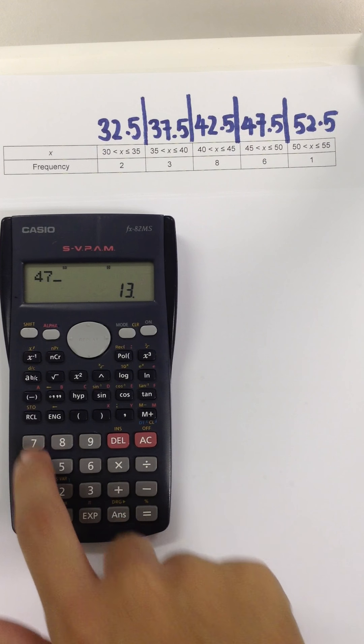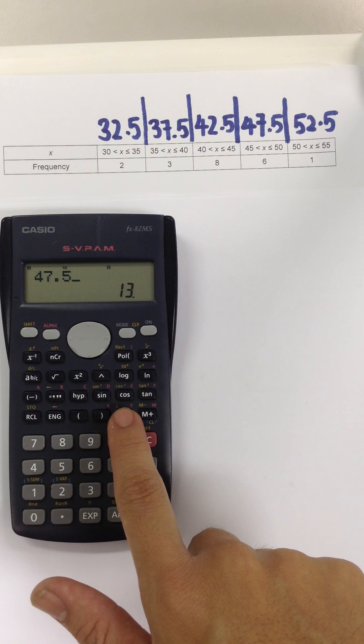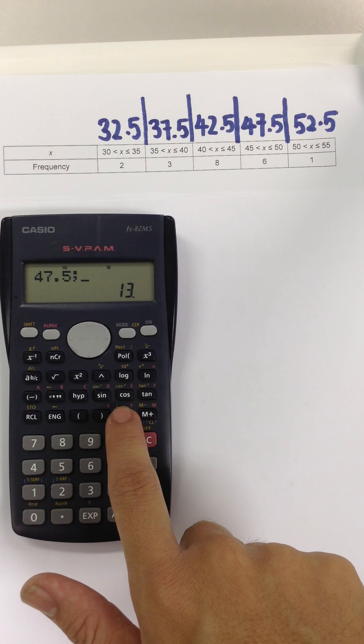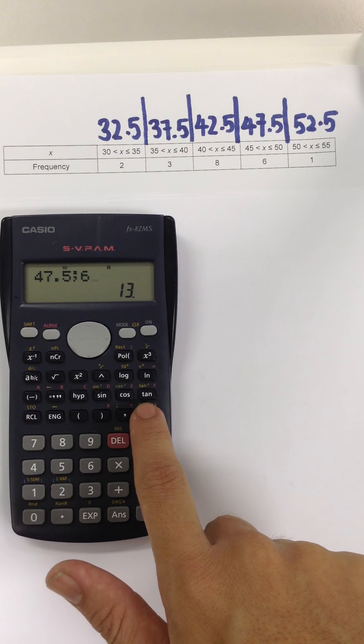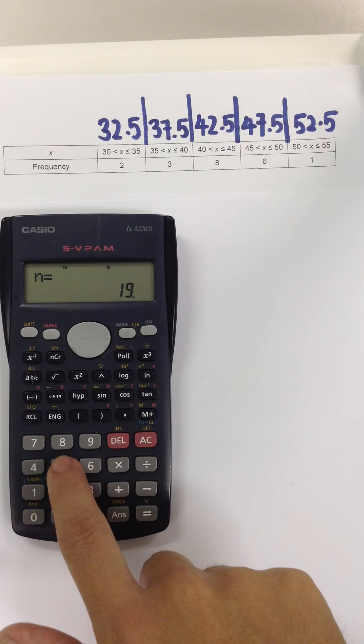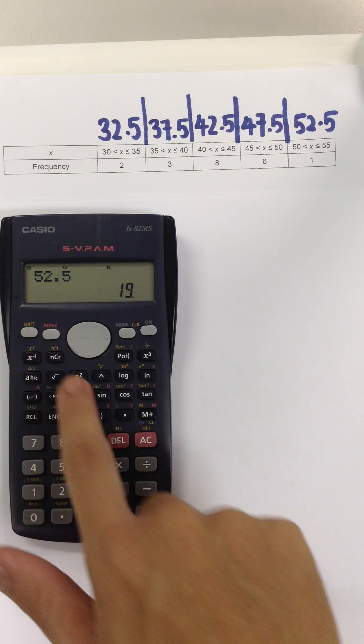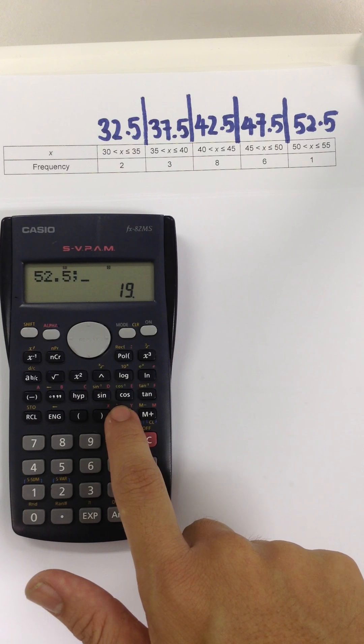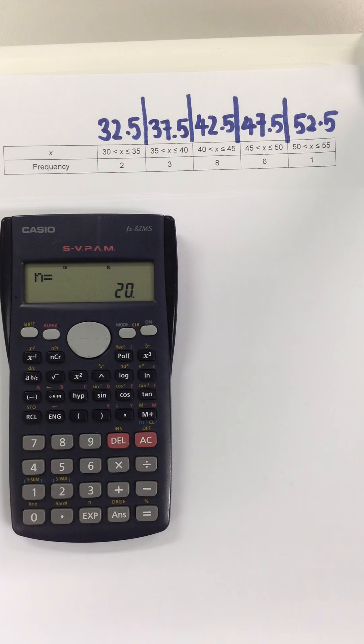47.5, shift, comma, frequency is 6, and plus. 52.5, shift, comma, frequency is 1, and plus.